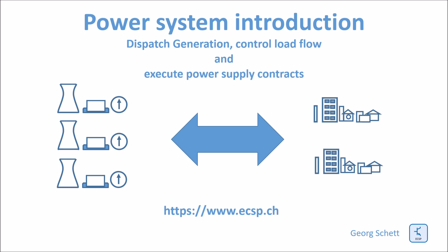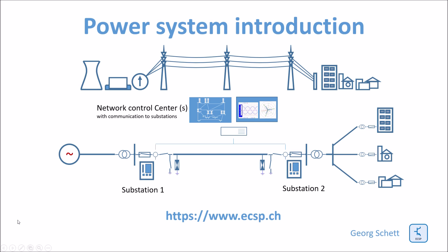On top of keeping frequency stable — meaning balancing generation and load — operators must dispatch generators, control load flow, and execute power supply contracts. This is done in partly decentralized control centers. In these network control centers you control the entire grid: keeping it stable, ensuring voltages and phase angles are correct. These centers communicate with each other, so there is also a lot of electronics and communication involved in the whole power grid.